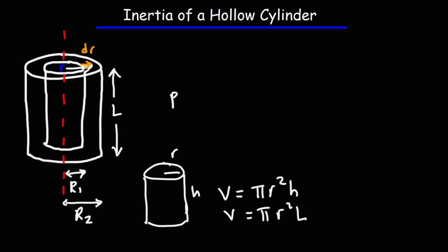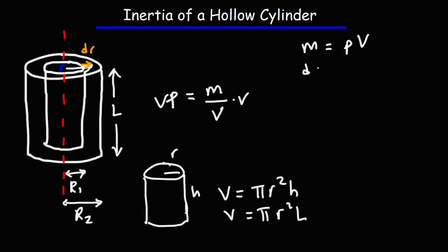Density is mass over volume. If you multiply both sides by v, you get that mass is density times volume. If we take the differential of both sides, we get that dm is ρ dv.